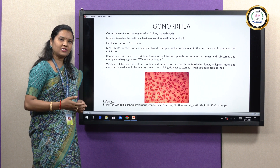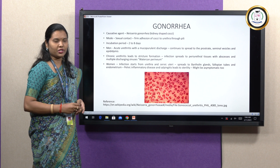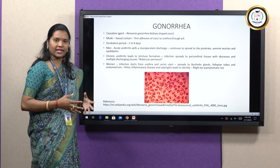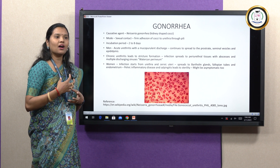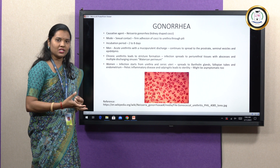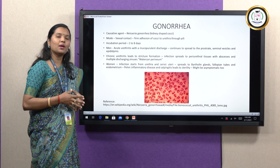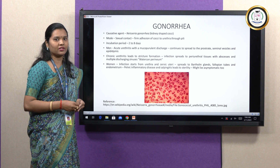The infection spreads to the Bartholin glands, endometrium, and fallopian tubes. In women, the severity of gonorrhea is generally less, and women could be asymptomatic — meaning they just harbor the organisms in their urethral region without producing clinical disease — but men are always infected severely by gonorrheal infections.